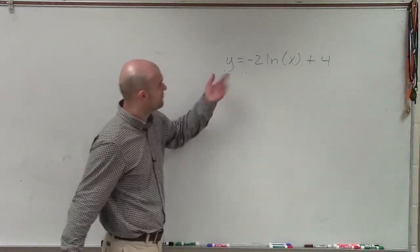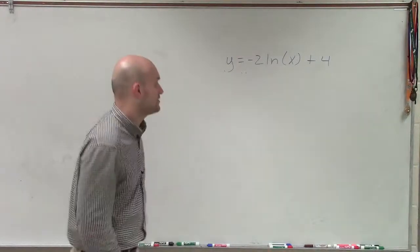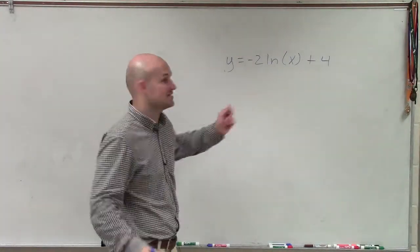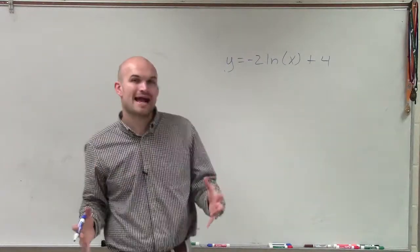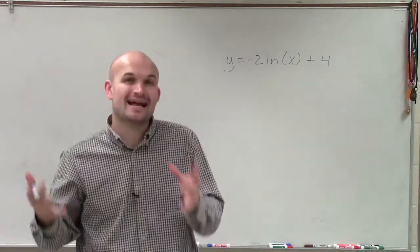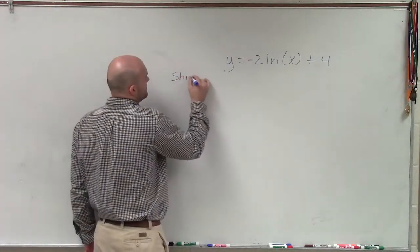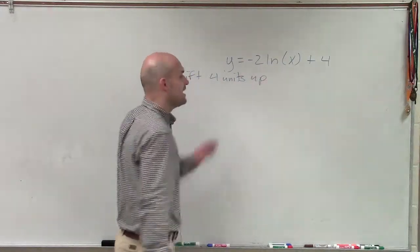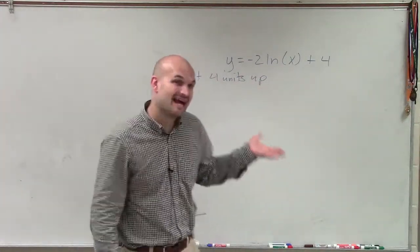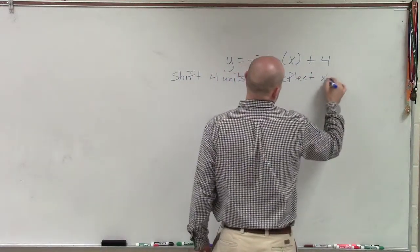Alright, ladies and gentlemen, what we have is y equals negative 2 ln of x plus 4, and we need to graph this. To graph this, we want to identify the transformations. You can see I have a plus 4, and I put that x in parentheses so we know we're adding the 4 outside of the function. Therefore, that's going to tell us to shift 4 units up. Then I'm multiplying by negative 2, and that negative is going to tell me to reflect over the x-axis.